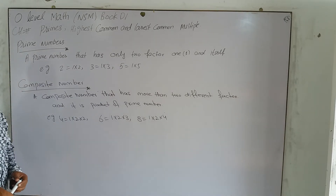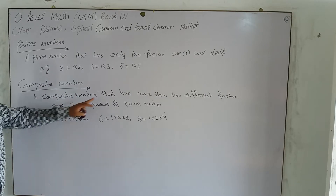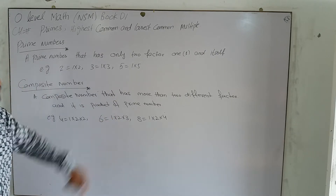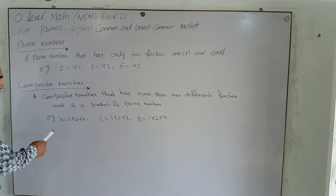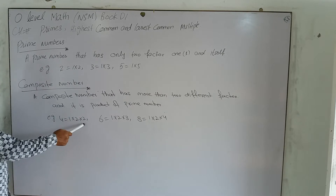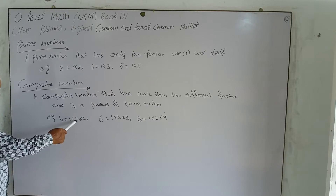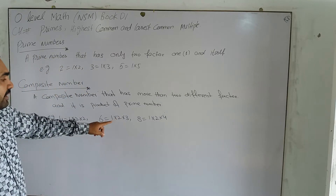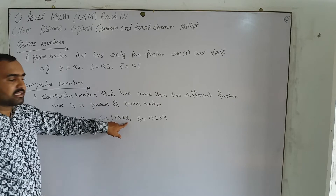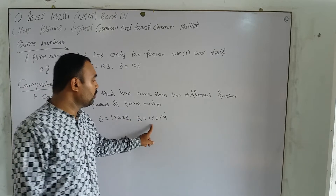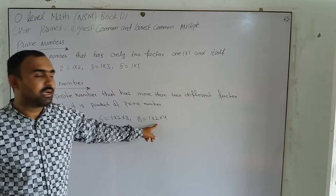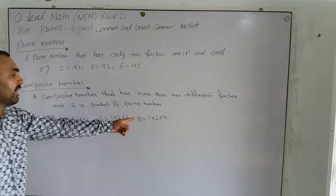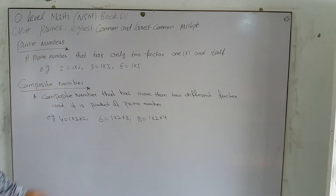Next is composite number. A composite number has more than two different factors, and it is the opposite of a prime number. For example, 4 has factors 1, 2, and 4. Similarly, 6 has factors 2 and 3 (both prime numbers), giving 2 × 3 = 6. And 8 has factors 2 and 4, where 2 is a prime number. These are composite numbers.